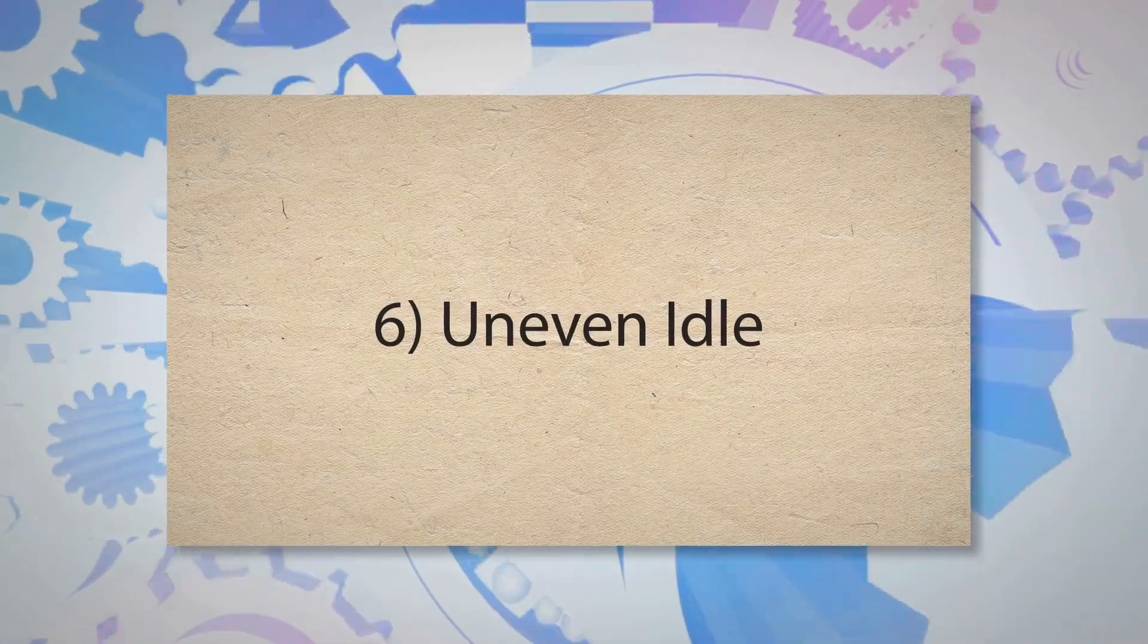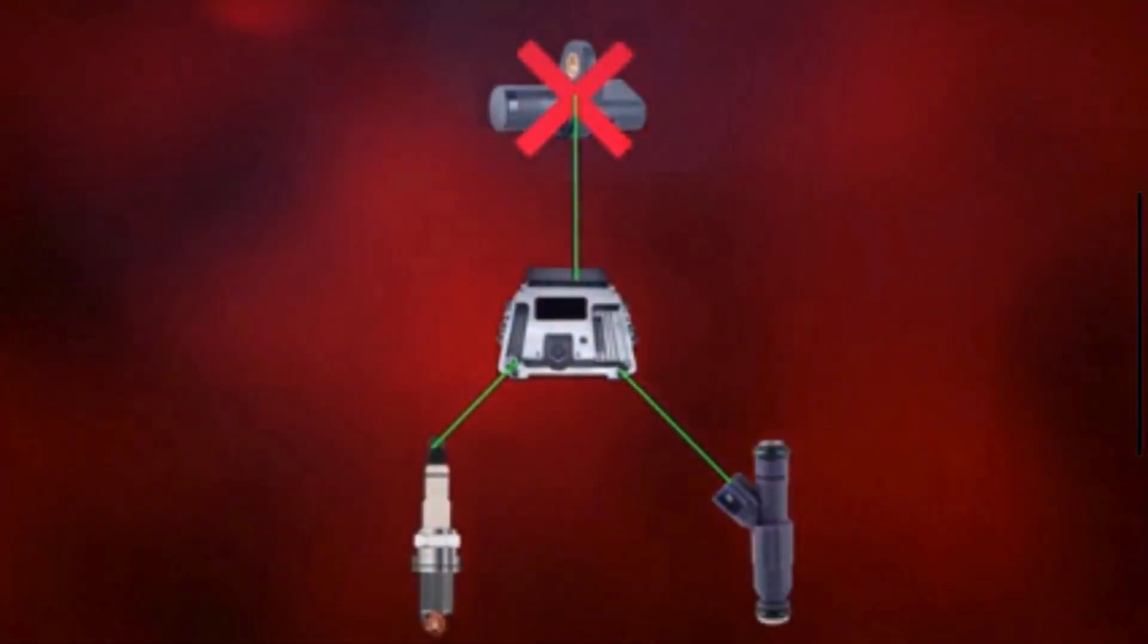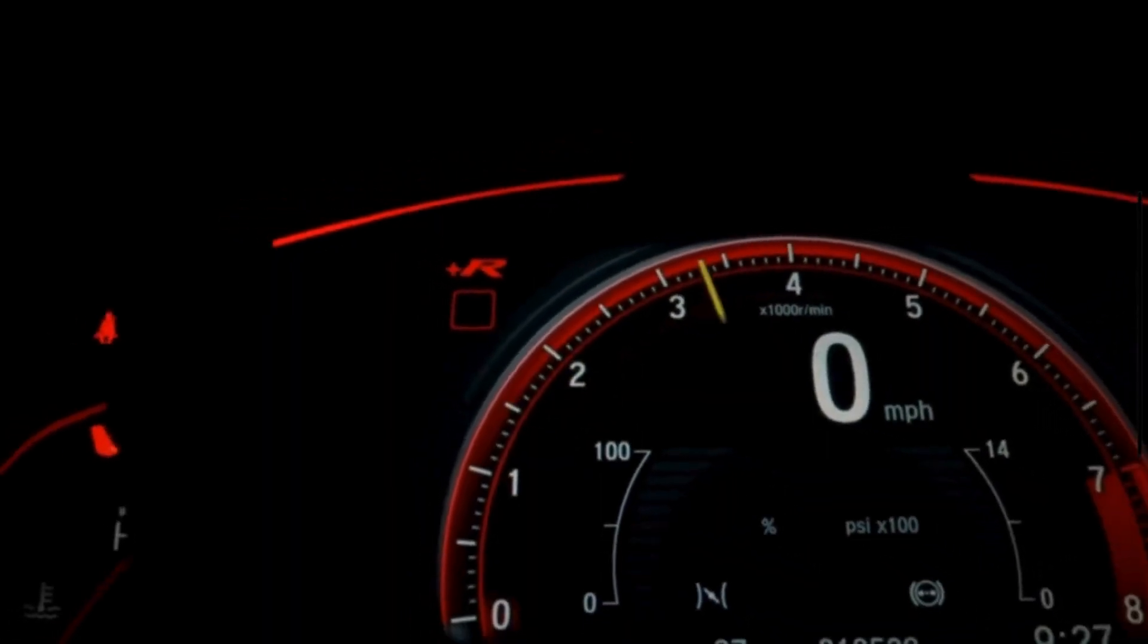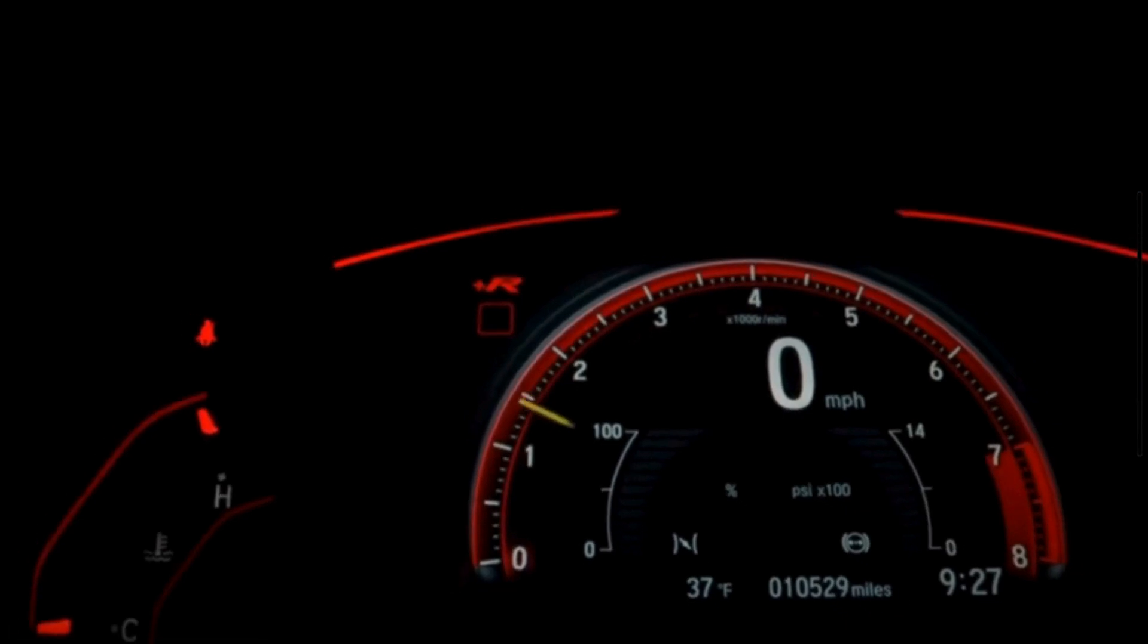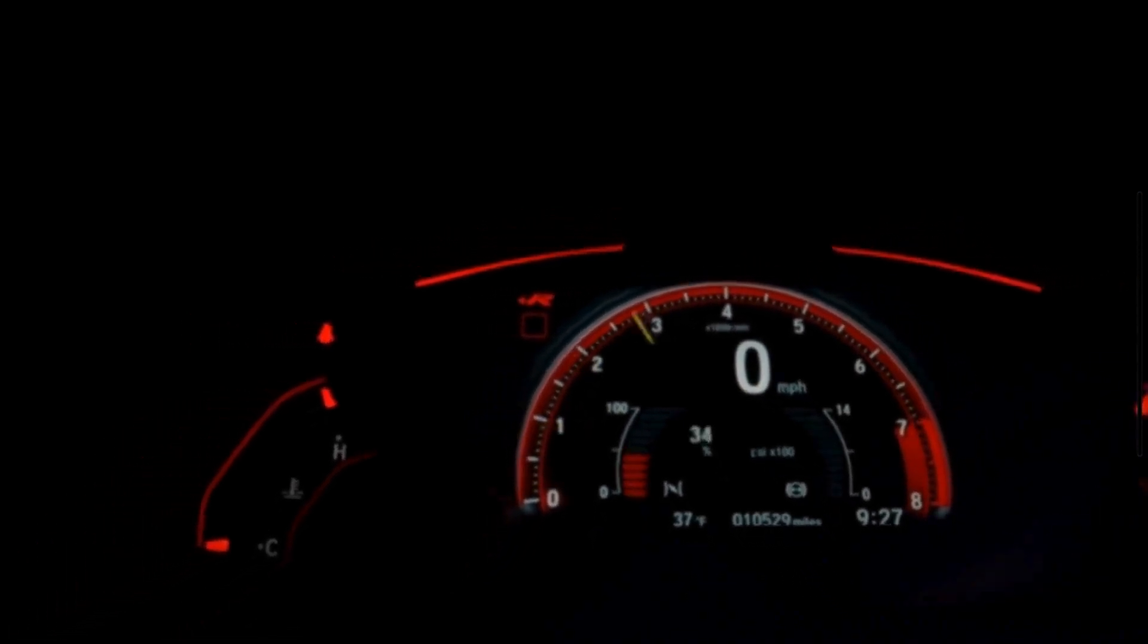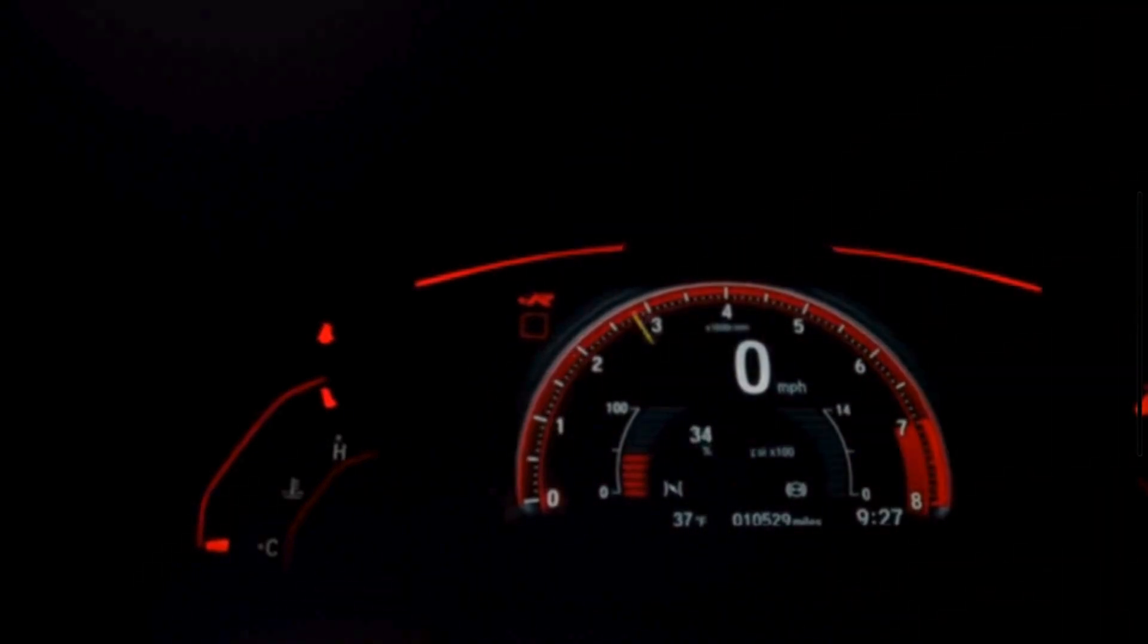6. Uneven idle. A faulty crankshaft position sensor can send erratic signals to the engine control module, causing uneven fuel delivery and ignition timing. This results in a rough or unstable idle, which can be felt as shaking or vibration in the vehicle.